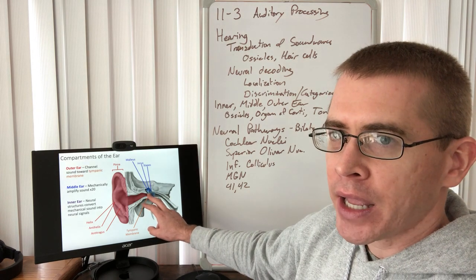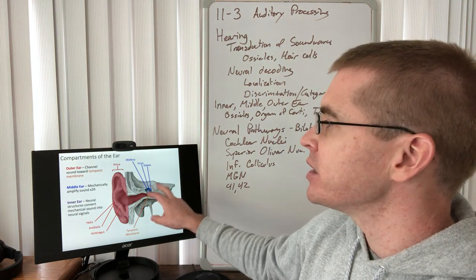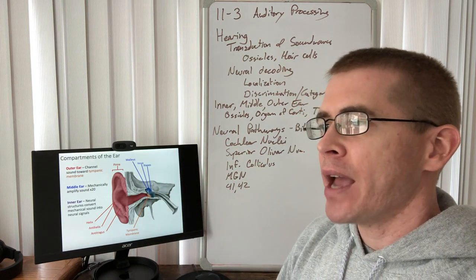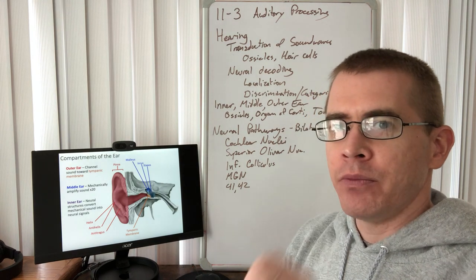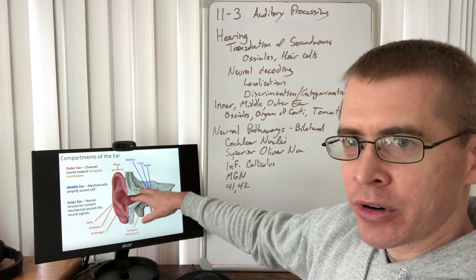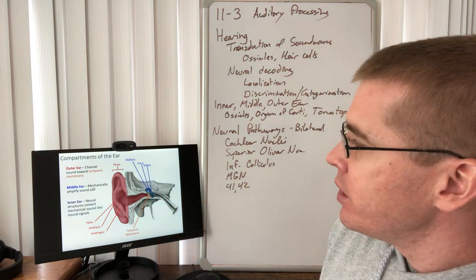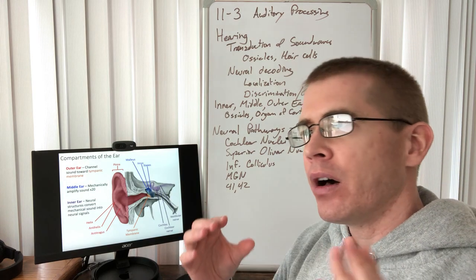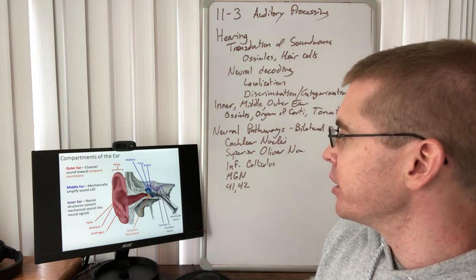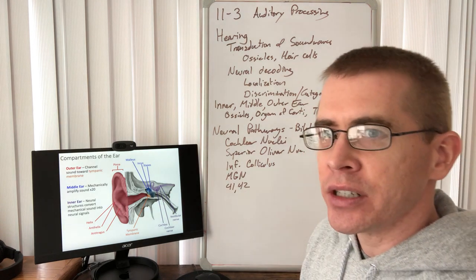The middle ear is the mechanical amplification part. It has the malleus, incus, and stapes. The movements of those ossicles magnify the movement of the tympanic membrane 20 times — via the hammer, the anvil, and the stirrup, which are the Latin terms used. The inner ear is where that mechanical propagation gets transferred into neural stimulation in the cochlea, and cranial nerve 8 carries that propagation back to our brainstem.